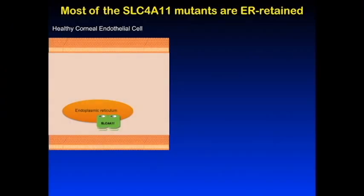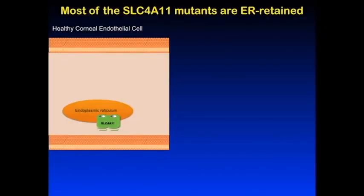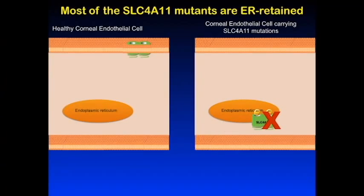Normally, membrane proteins like SLC4A11 are made in an organelle called the endoplasmic reticulum. After their biosynthesis, the protein traffics to the plasma membrane, where it can carry out its normal function. In the case of mutant proteins like mutant SLC4A11, the mutant protein may be retained in the endoplasmic reticulum, which means that the protein cannot carry out its normal function, and disease arises.